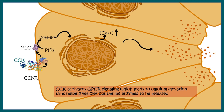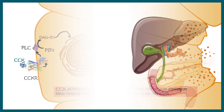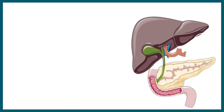At the molecular level, CCK is a peptide hormone that binds to the CCK receptor — in the pancreas this is primarily CCK receptor type B. This stimulates a G-protein signaling cascade, ultimately leading to calcium elevation in the cytosol. The elevated calcium facilitates fusion of enzyme-containing vesicles and release of these enzymes into the acinus, resulting in pancreatic enzyme secretion.